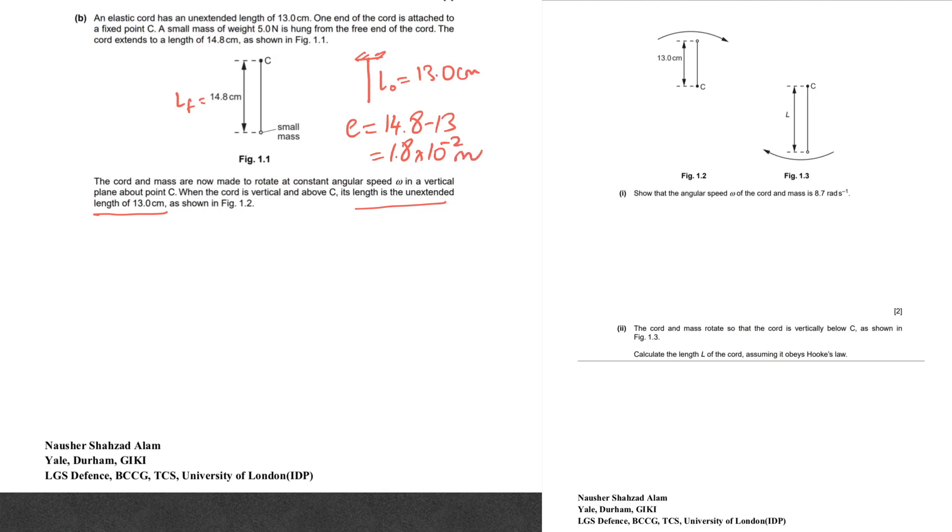Let's calculate the extension. The extension that you should get is 14.8 minus 13, which is 1.8 centimeters, which can also be written as 1.8 times 10 to the power minus 2 meters. Also, the force or the load that you had used is given - you had a 5 Newton load, so the force was 5 Newtons. You can use the formula F equals k times e and you can find the value of k as 5 divided by 1.8 times 10 to the power minus 2.